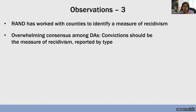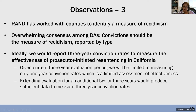As required by legislation, we worked with nine county DAs to identify a measure of recidivism, and the overwhelming consensus has been that convictions should be the measure reported, by type. Ideally, you'd want to report three-year conviction rates to measure the effectiveness of prosecutor-initiated resentencing in California. But this is a three-year pilot that ends in September 2024, and the evaluation only ends six months after that — so we'll probably be limited to measuring one-year conviction rates at best. Extending the evaluation by two or three additional years would be important.